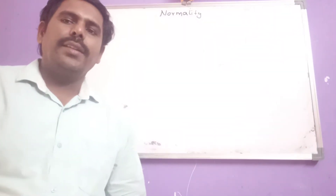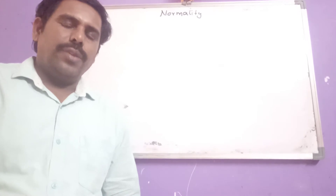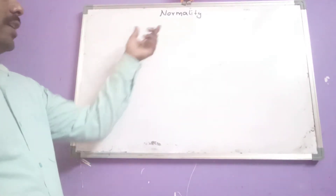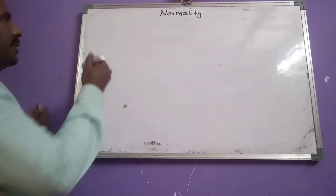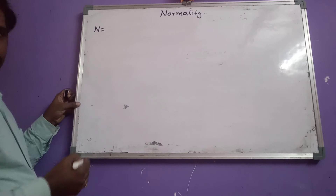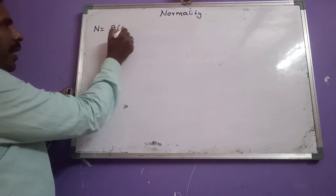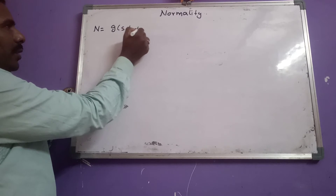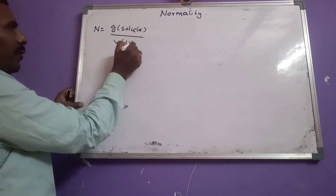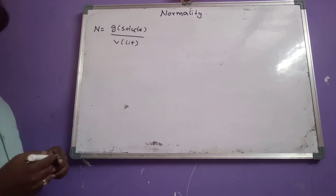Hello students. In this video, we have to learn about normality. What is normality? First, let us see the definition. It is indicated with N. Number of gram equivalents of solute present in 1 liter of solution is known as normality.